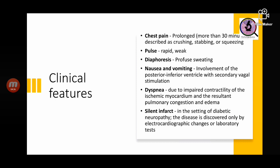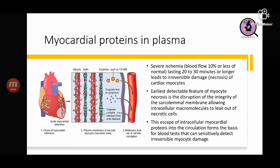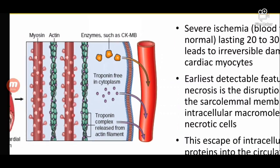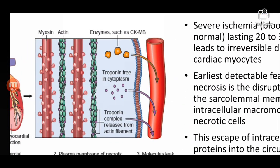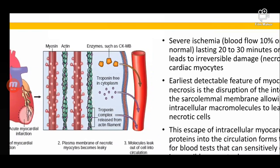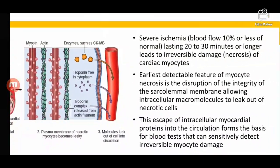Detecting myocardial proteins in blood is based on the principle that after severe ischemia there is irreversible damage to cardiac myocytes. When myocytes are damaged, there is loss of integrity of the sarcolemmal membranes, and certain intracellular molecules leak out of the necrotic cells. Detecting these macromolecules — such as CKMB and troponins — is the basis of tests for myocardial infarction, and they are then detected in the serum.